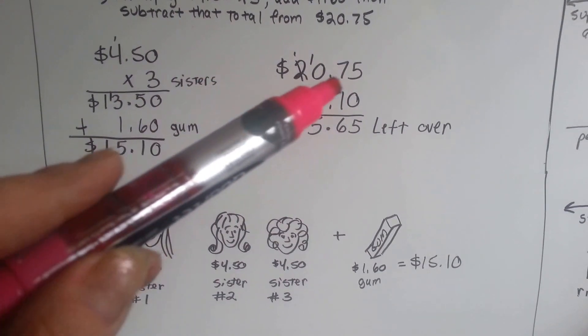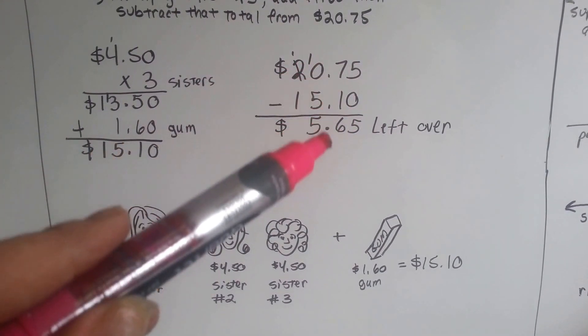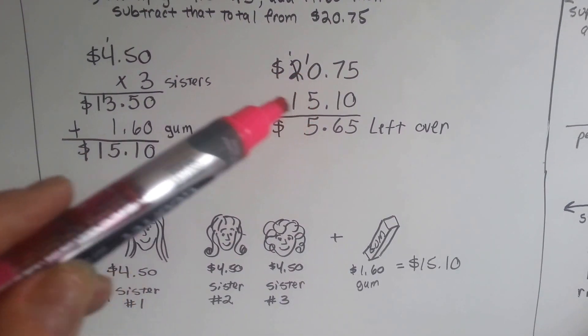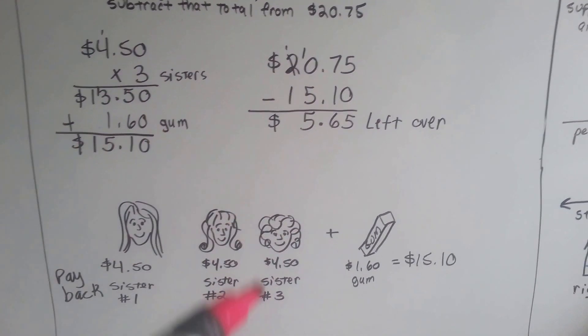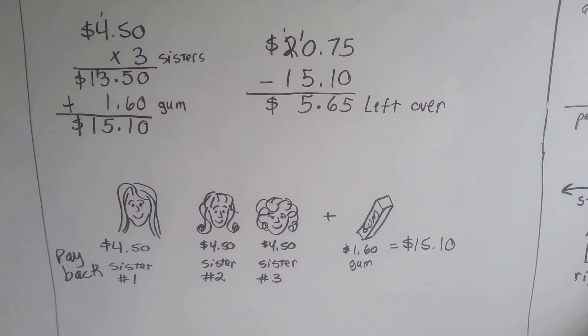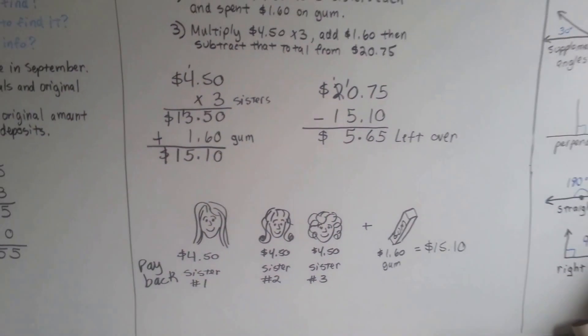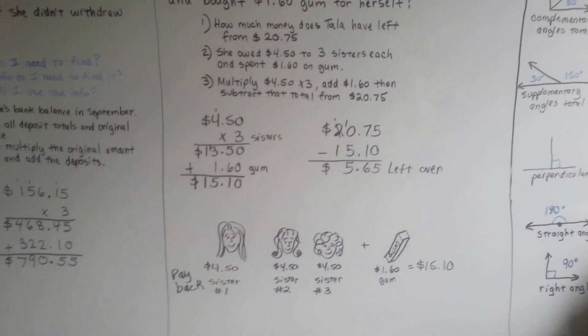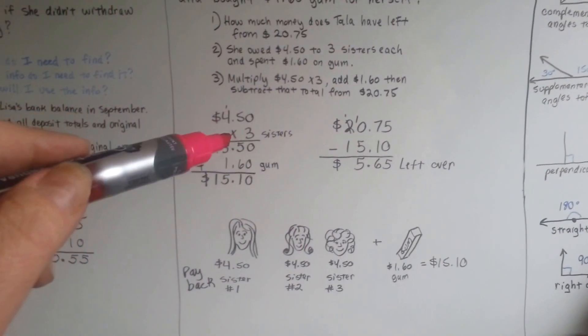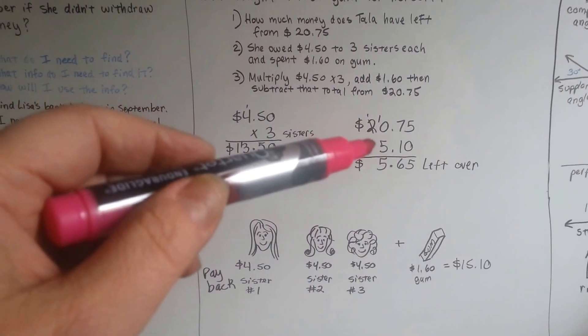Now we need to find out what the balance is left from the $20.75. So we subtract it. Five take away zero is five. Seven take away one is six. Twenty take away fifteen is five. So we know that she's got $5.65 left over from her leaf raking money.